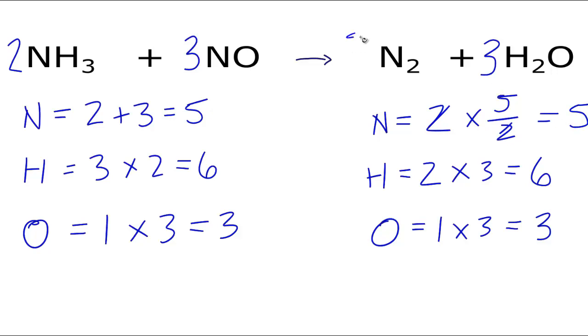So I'm going to put that five over two here as the coefficient on the N2. And now we're done. You can see why I left the N2 until last. That enabled me to do this fraction here to balance the equation.